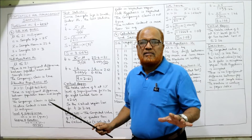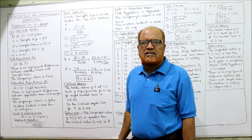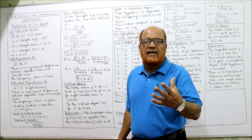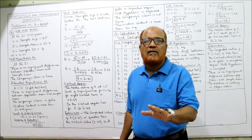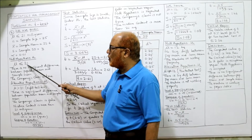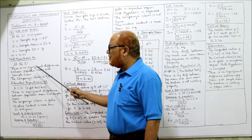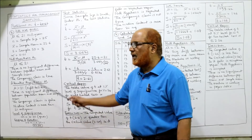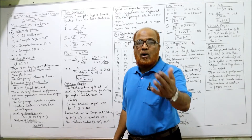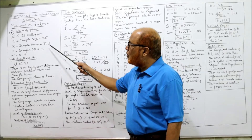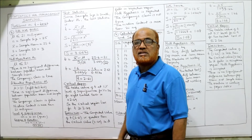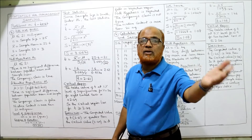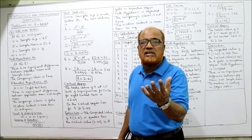The null hypothesis means no difference — whatever the company claims is correct. We first believe the company's contention is true: mu is less than or equal to 21 milligrams, meaning there is no significant difference between population mean and sample mean. The alternative hypothesis is the opposite: our sample shows 22.6, meaning the company's claim is false and more than 21 milligrams of nicotine is present.